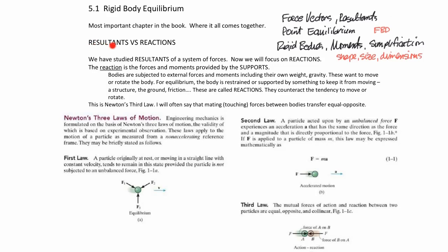Up until now, we've talked about resultants. A resultant is the sum of the forces equal to something, and the sum of the moments equal to something. In this chapter, we're going to talk about reactions. Reactions are what keeps something from moving — if an object isn't supported in some way, it will be a dynamics problem. It will move or rotate, and the reactions are what keeps it from rotating or moving. Those reactions are provided by the supports.